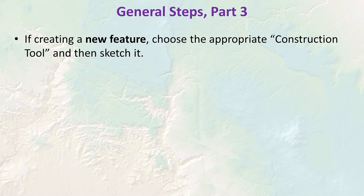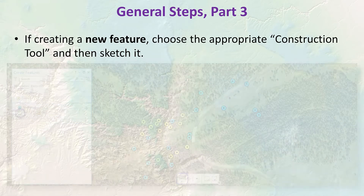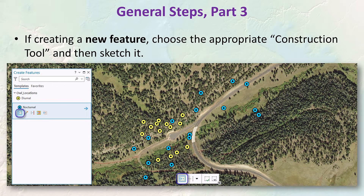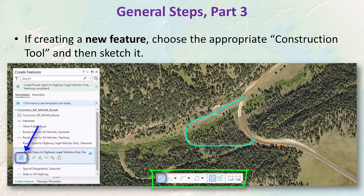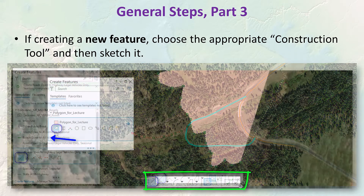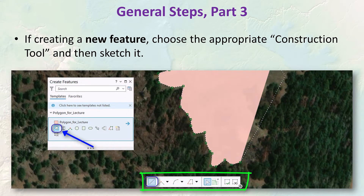When creating new features, we have to choose an appropriate construction tool to sketch on the screen. With points, it's almost always just the point construction tool. But with polylines, there's a whole variety of construction tools available — and the same with polygon construction tools. There are lots of different ways you can create these objects. In the lab exercise, we're going to try a couple of them so you'll get some experience.